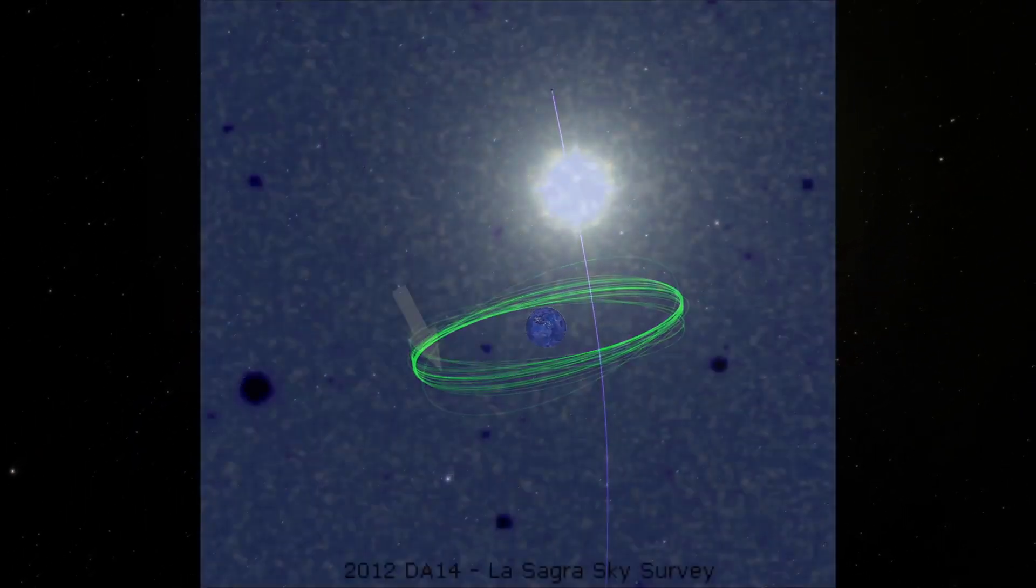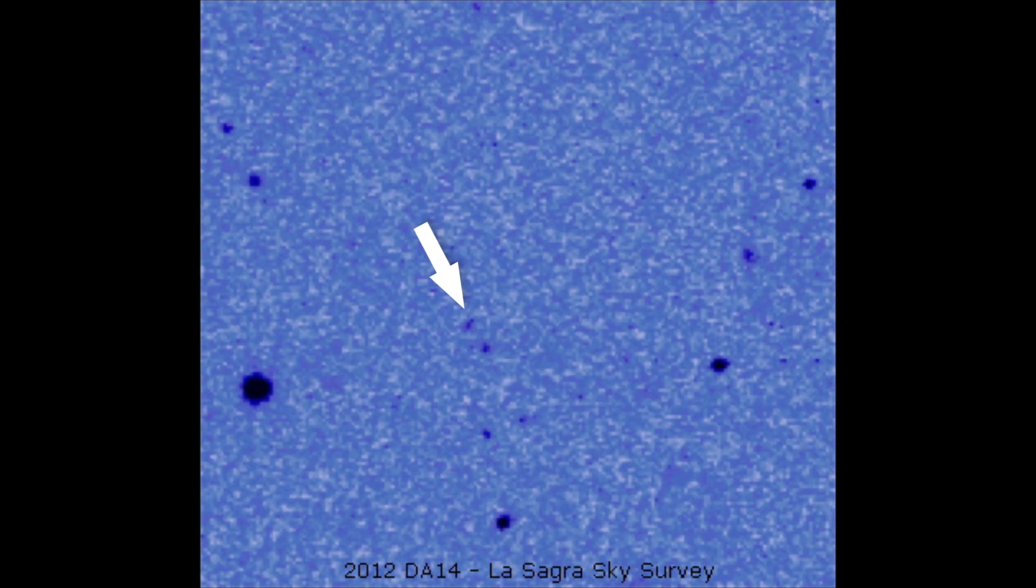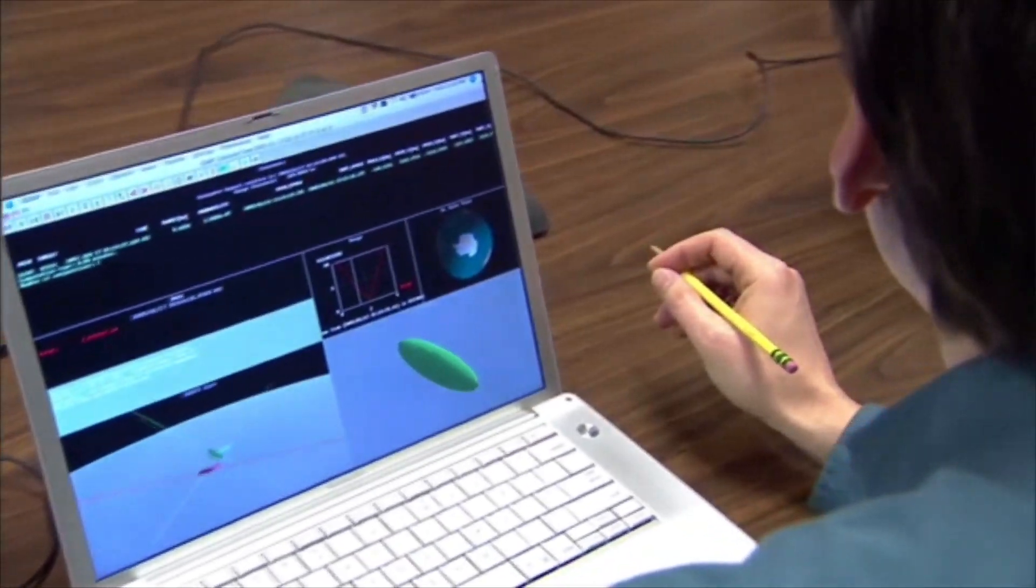How do we know this? We discovered the asteroid just a year ago, but since then, scientists have tracked its trajectory.